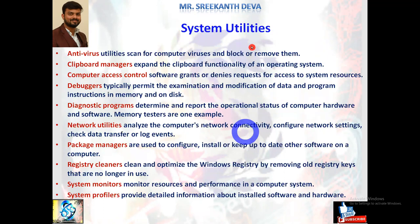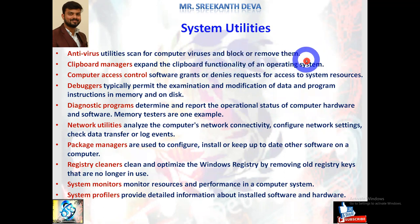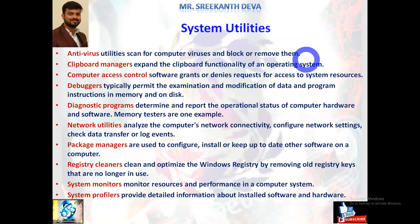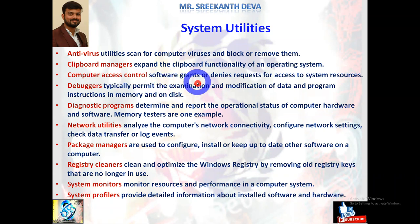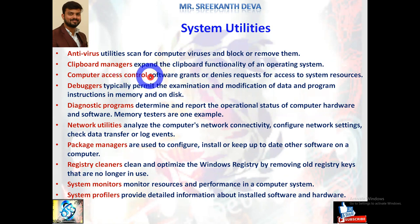System utilities: antivirus utilities scan for computer viruses and block or remove them. Clipboard managers expand the clipboard functionality of an operating system. Computer access controls grant or deny access to system resources, providing security levels. Debuggers — a bug is an error, debug means resolving and rectifying errors — typically permit the examination and modification of data and program instructions in memory and on disk.